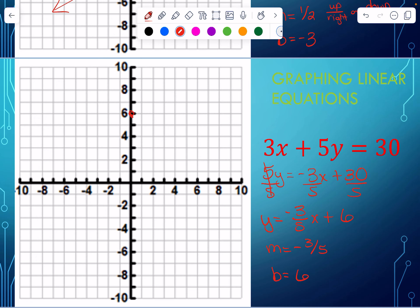So I'm going to start at 6. Since I have a negative 3 fifths, I could go down 3, one, two, three, right 5. Or remember, my other option is up 3, one, two, three, left 5. And there would be 3 points. Take those, draw in our line. And that is how we graph in standard and slope intercept form.